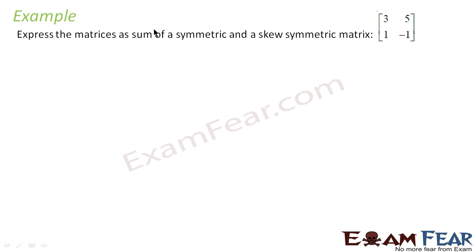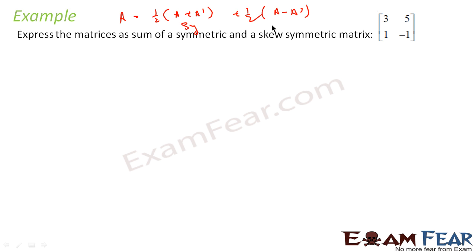Let's take one more example. We have to express this matrix as a sum of symmetric and skew-symmetric. The formula we use is: any matrix is nothing but 1/2 (A + A') plus 1/2 (A - A'). This first part is symmetric and the second part is skew-symmetric.